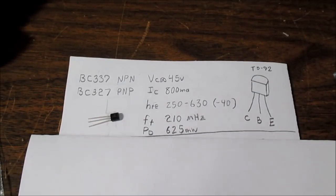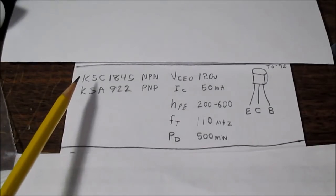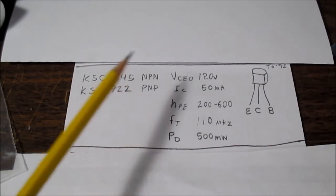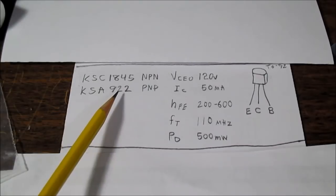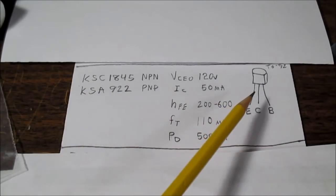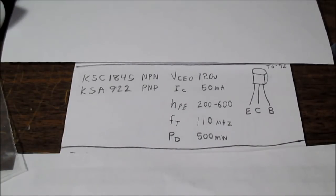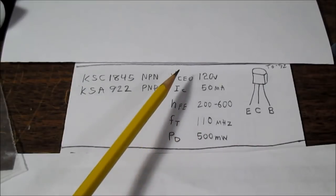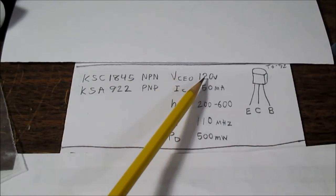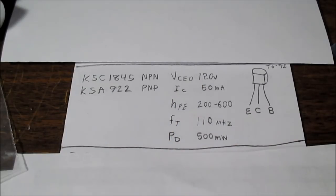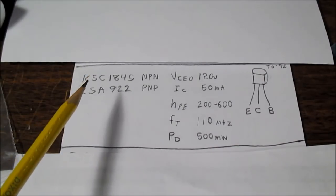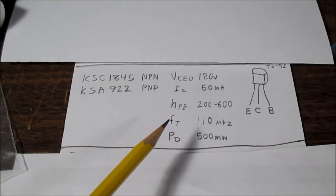The next transistor is the KSC 1845 NPN, or its complement the KSA 922. Also comes in a TO92 package. This transistor is meant for preamplifiers. It's a low noise, fairly high gain transistor. It has a pretty high collector emitter voltage of 120 volts, where it's used in the front ends of power amplifiers, hi-fi amplifiers, things like that. So if you're thinking about building a discrete preamplifier circuit, such as a phono preamp or something like that, I would consider looking at these low noise audio signal transistors.